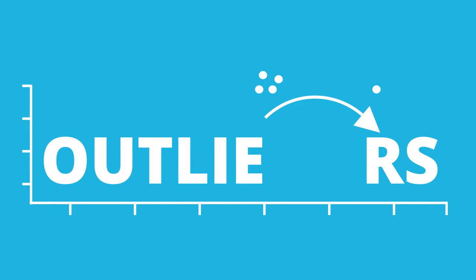Now that we know how to identify outliers, the thing we need to do, as stated earlier, is check out the outlier values to see if it's likely that the data are incorrect.